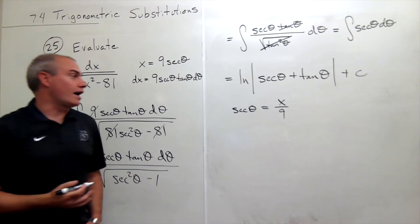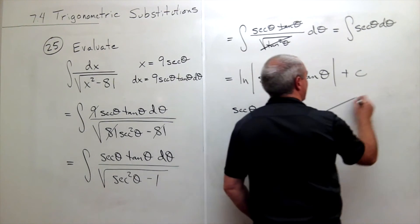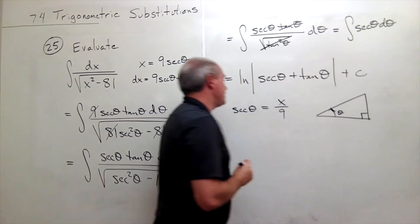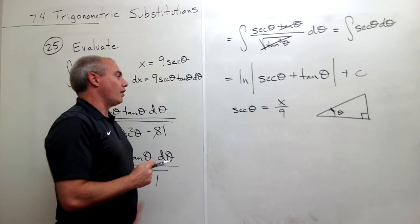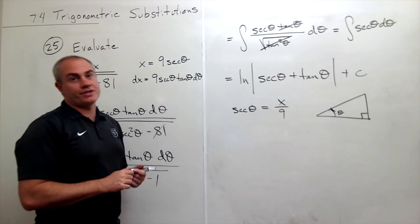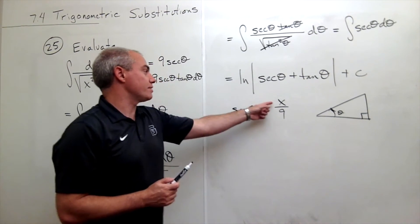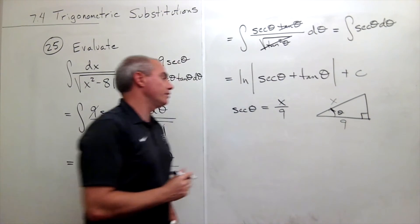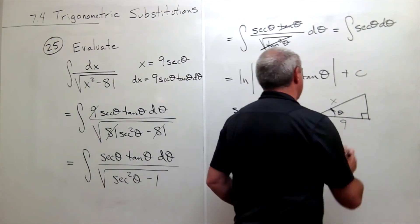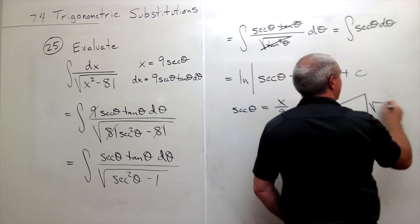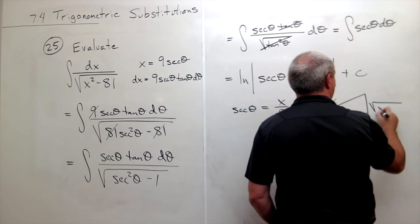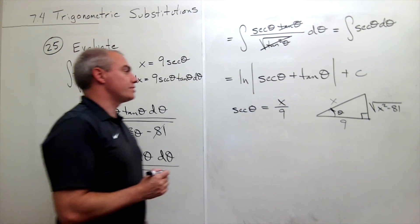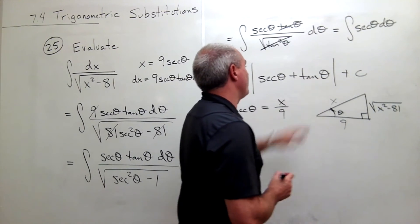I can use a reference triangle. If this is angle theta, secant theta is 1 over cosine. Cosine is adjacent over hypotenuse, so secant is hypotenuse over adjacent. The opposite side, by Pythagorean theorem, is the square root of x squared minus 81. Now we can find tangent theta.